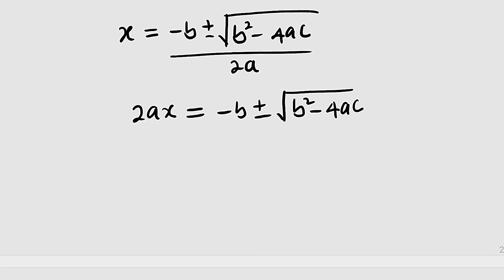And it is going to become positive, so we have 2ax + b equal to plus or minus the square root of b² - 4ac.